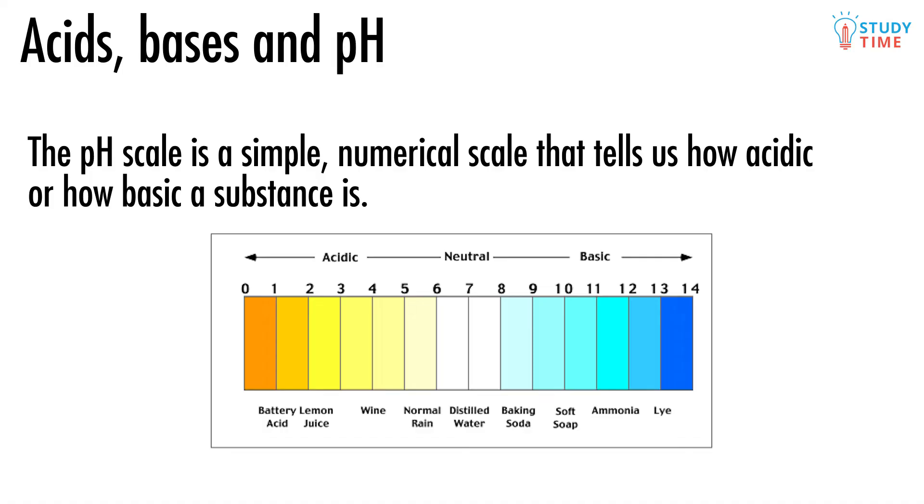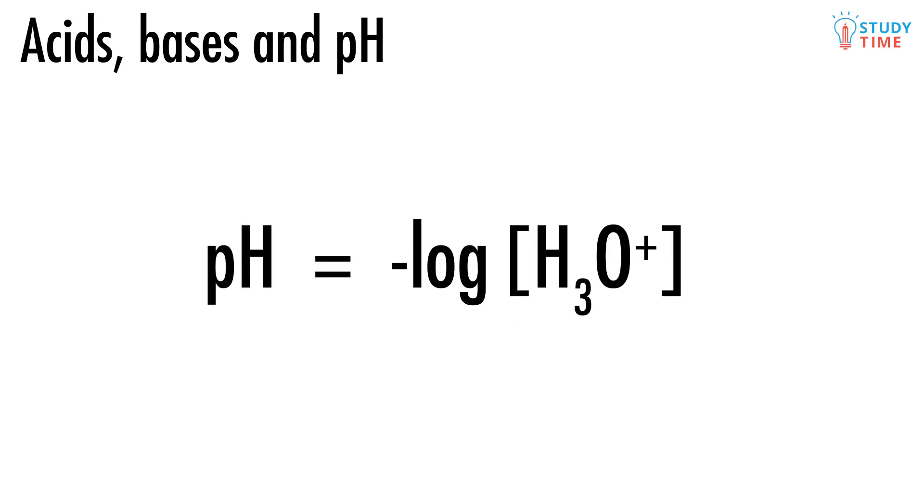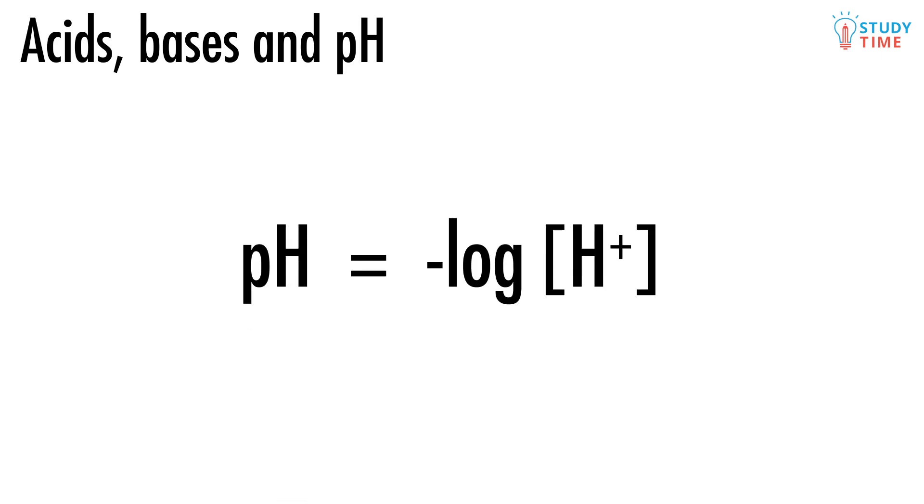But we still haven't answered the original question. What is pH actually telling us? It turns out to be a nice mathematical relationship. pH equals the negative log of the concentration of H3O+ ions. In other words, if we know the concentration of hydronium ions that an acid has produced, we can just chuck it into this equation, and we'll end up with a nice number for the pH scale. The negative log part means that the higher the concentration of H3O+ ions, the lower the pH will be.